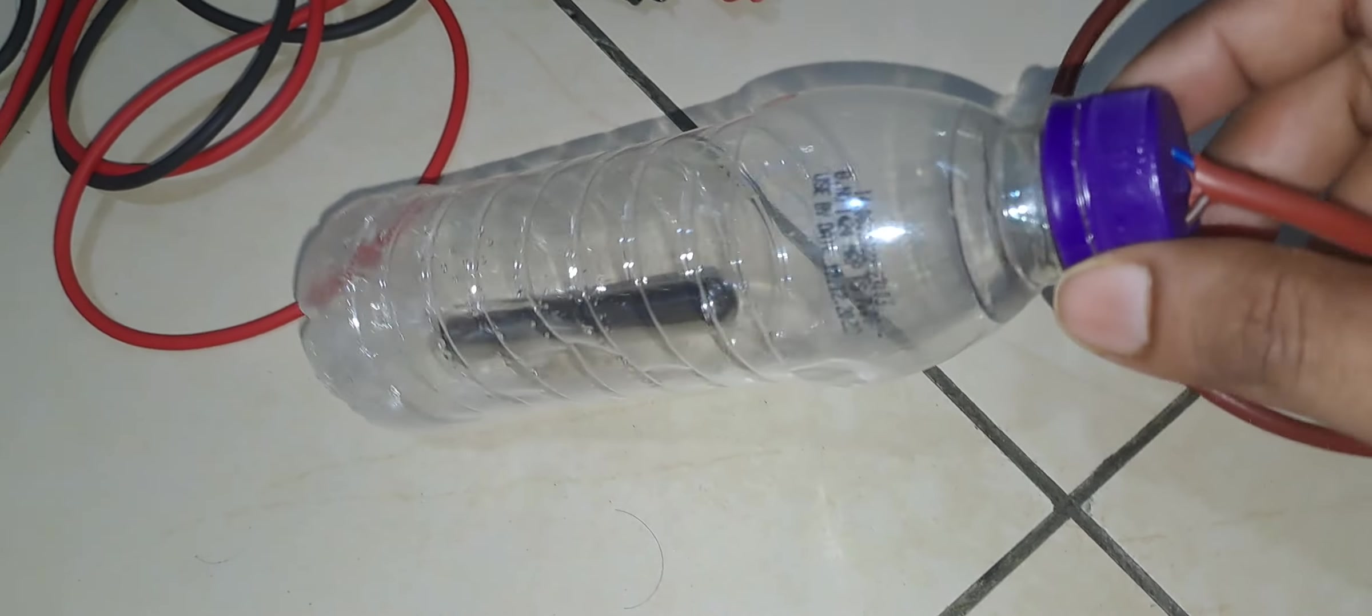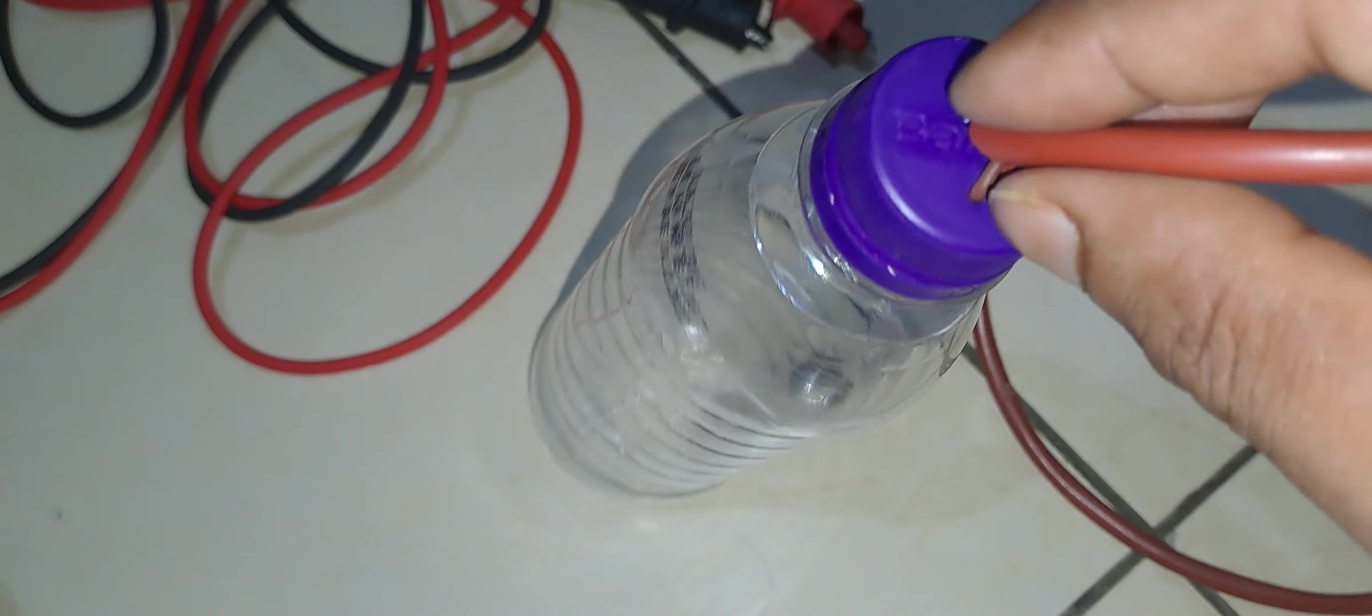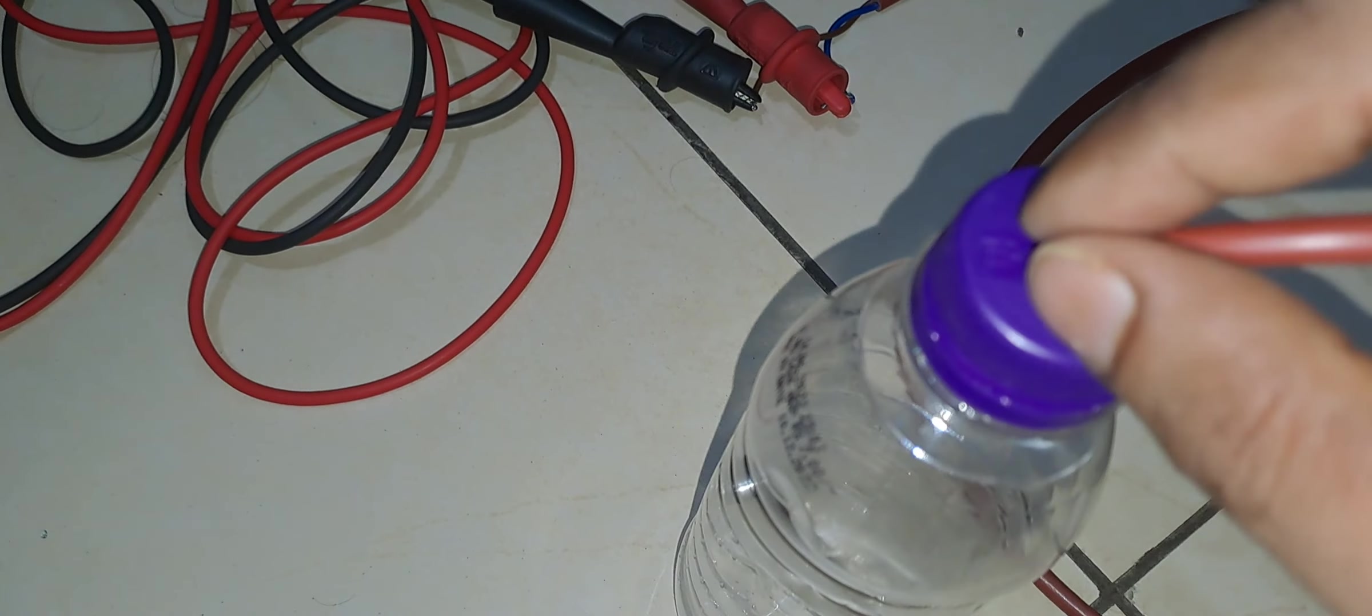So now my reed switch is ready. Only thing is that the connections seem to be open. I need to put some sealing compound here so that water doesn't go inside.